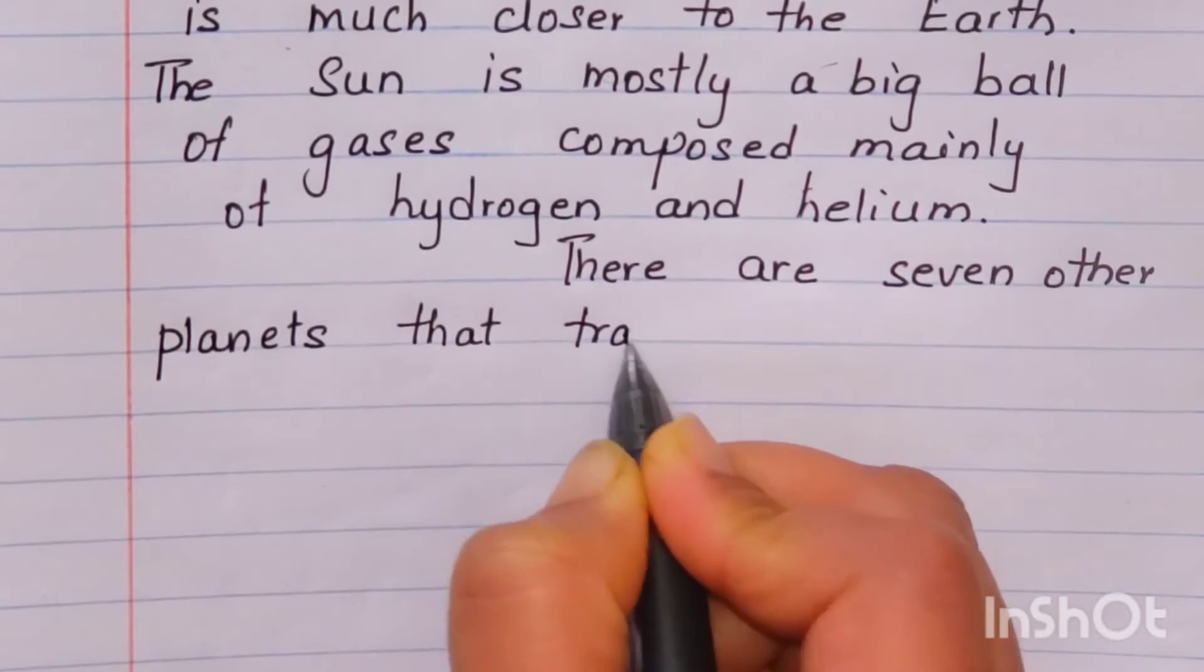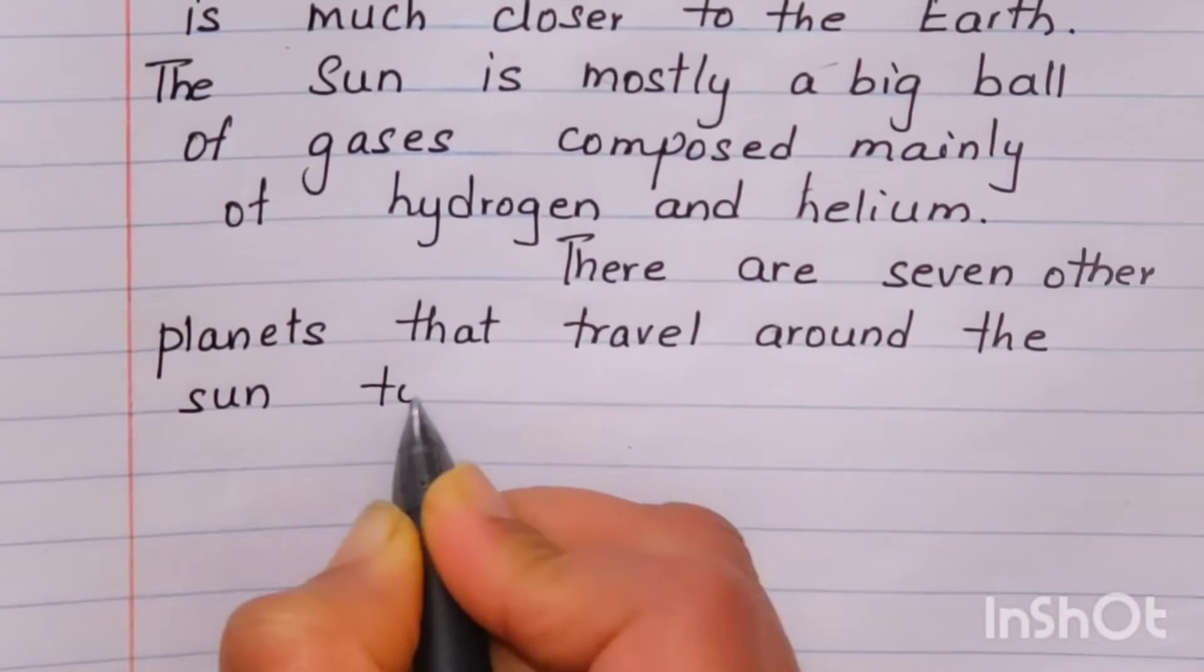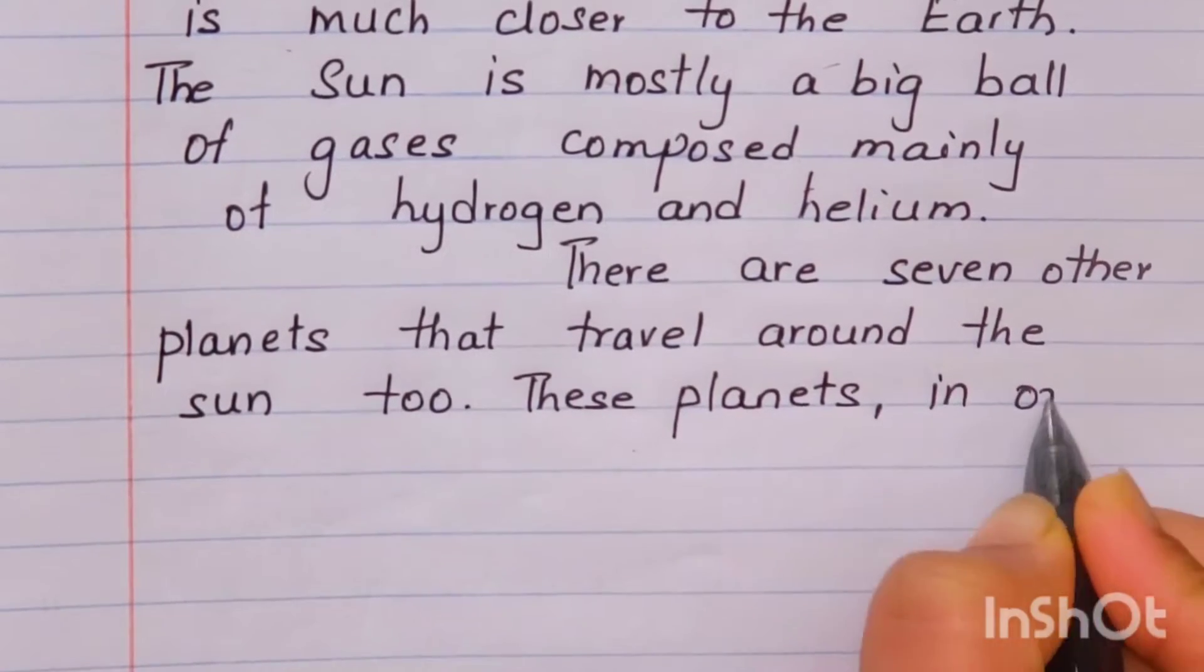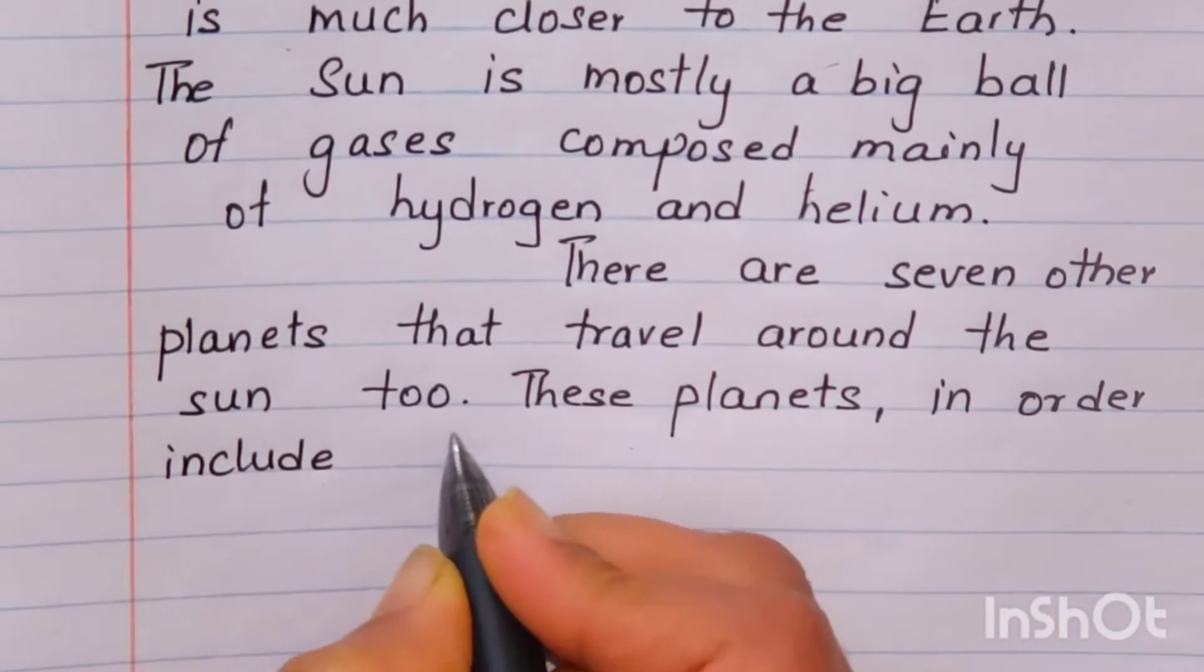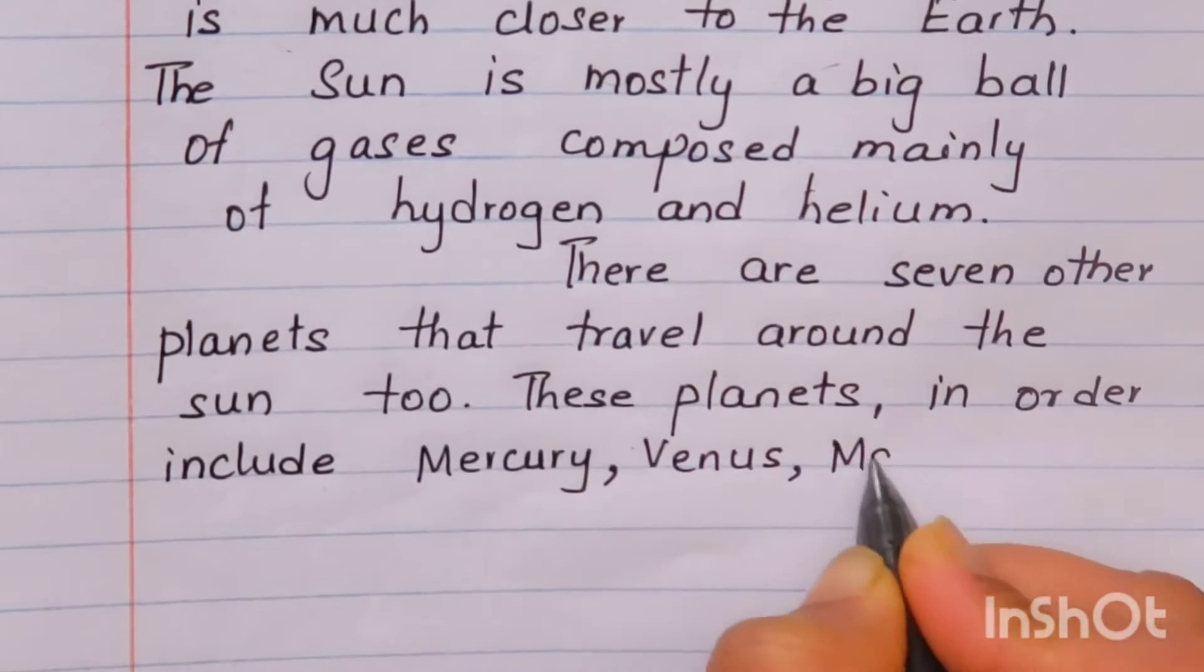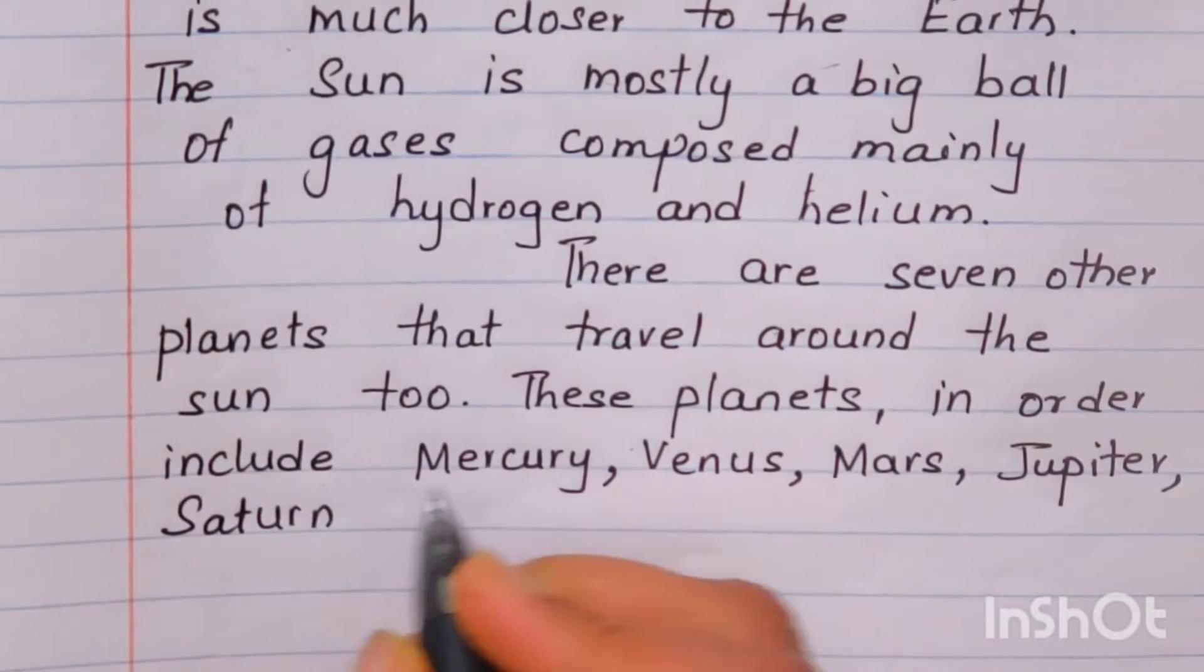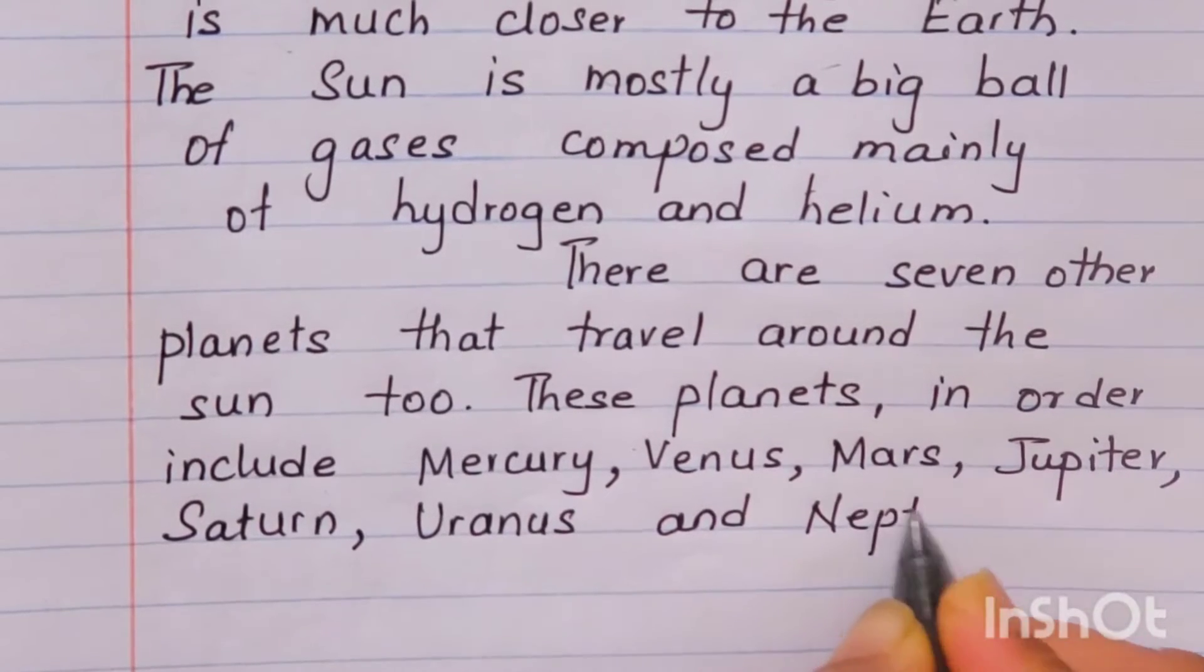There are 7 other planets. Including earth, 8 planets revolve around the sun too. The planets in order include Mercury, Venus, Mars, Jupiter, Saturn, Uranus and Neptune.